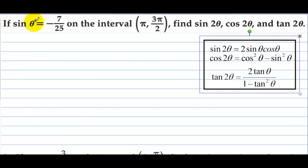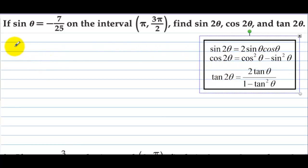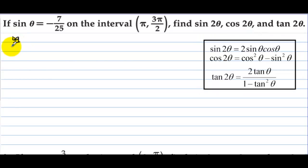Example: if sine of theta equals negative 7/25 on the interval pi to 3pi/2 — that's the third quadrant — find sine of 2 theta, cosine of 2 theta, and tangent of 2 theta. First, we need to find cosine. Sine squared theta equals 49/625.